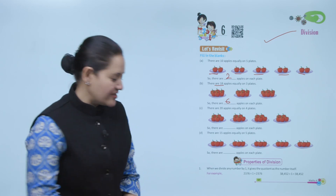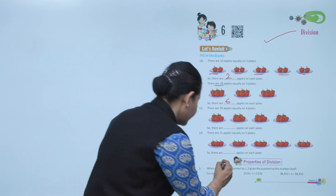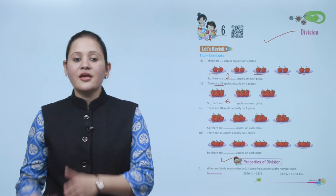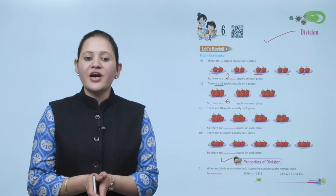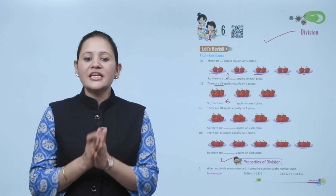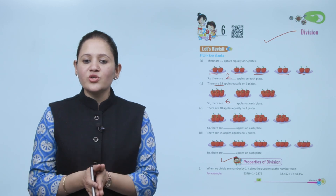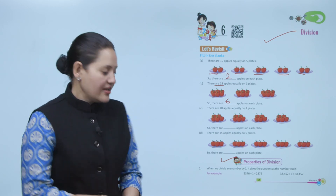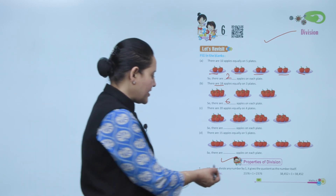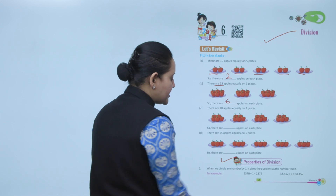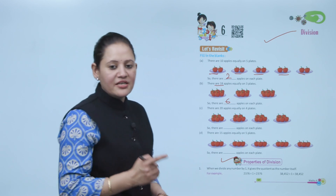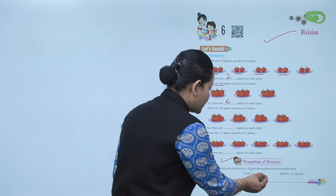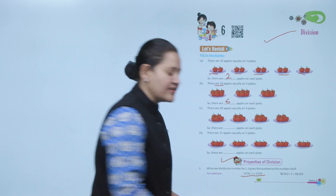Next are properties of division. When we divide any number by 1, it gives the quotient as the number itself. For example, 2376 divided by 1 gives a quotient of 2376.